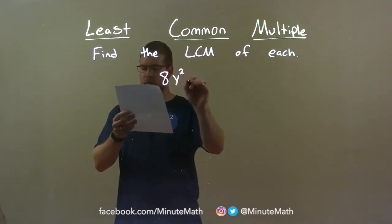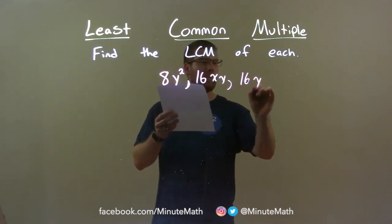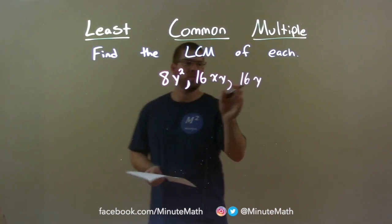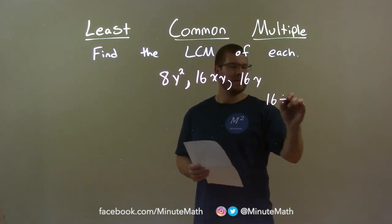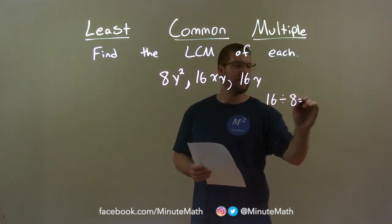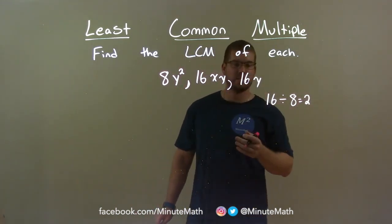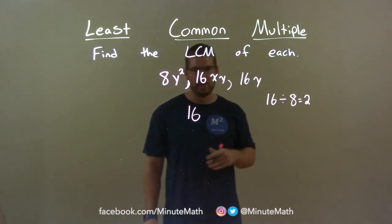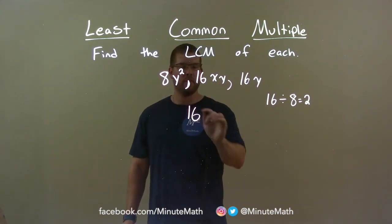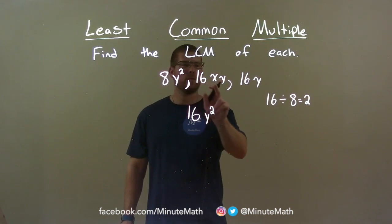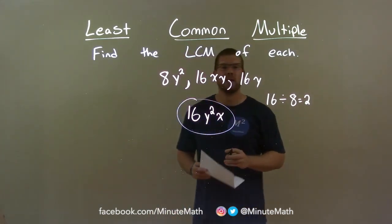8Y squared, 16XY, and 16Y. The largest number is 16, shared between two terms. 16 is divisible by itself once and divisible by 8 two times, so 16 is the number we need. Now for the variables: I have two Y's here, one Y and one Y — so encompass the most, Y squared. I have no X's, one X, and no X — so I must encompass that X. My final answer is just 16Y squared X.